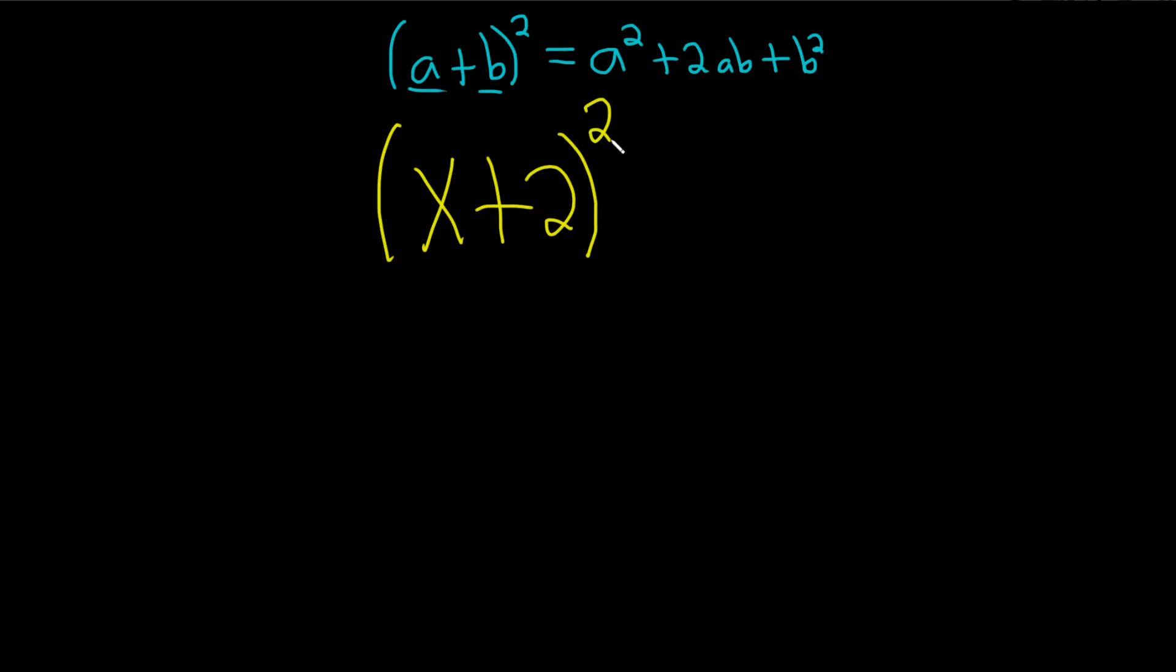So now let's apply that same mentality to this problem here. So this is our first one, so we square the first one. We multiply these, so 2X, and then we double it. So 4X.